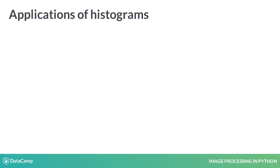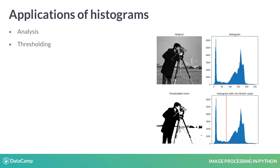We can learn a lot about an image by just looking at the histogram. Histograms are used to threshold images — an important topic in computer vision that we will cover later on in the course — to alter brightness and contrast, and to equalize an image, which we will also cover later on in the course.